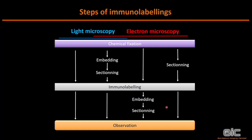When thinking about immunolabelings in light and electron microscopy, we identified three common big steps: chemical fixation, the immunolabeling itself, and observation. During the presentation, we will keep a color code: blue for things specific to light microscopy, red for electron microscopy. In light microscopy with cell culture, the protocol can be straightforward from fixation to labeling to observation. In tissue, you can have an embedding step — for example in paraffin — then sectioning, then immunolabeling. This is also the kind of procedure used in electron microscopy with post-embedding techniques. In electron microscopy, you also have pre-embedding techniques.